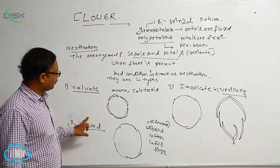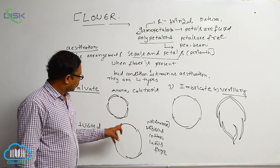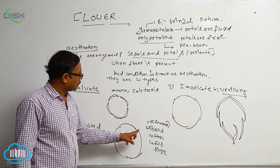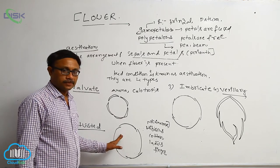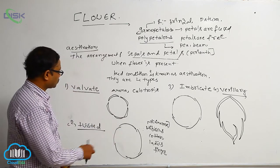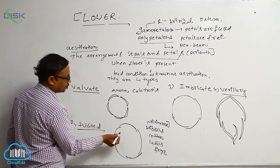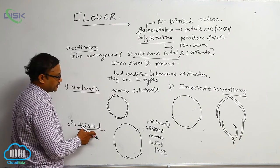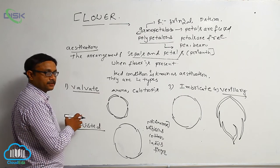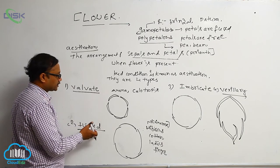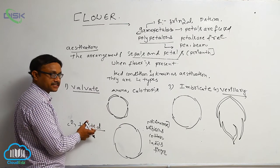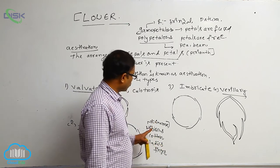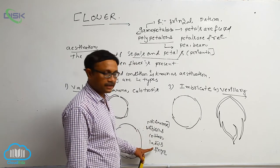After that, twisted aestivation. In twisted aestivation, one margin of each perianth member is outside and one is inside, alternating — making it complete overlapping. So this type of aestivation is known as twisted aestivation. It is completely overlapped. Without overlapping is valvate aestivation. Examples of twisted aestivation: China rose (Hibiscus), cotton, and lady's finger.